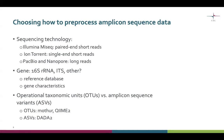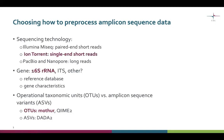In Chipster, for OTUs we have tools available based on mothur, and we have tools available for ASV analysis based on the DADA2 pipeline. In this video, we will focus on a case where we have single and short reads from ion torrent sequencing. We have sequenced the bacterial 16S ribosomal RNA gene and we want to look at operational taxonomic units and do the analysis with tools based on mothur.